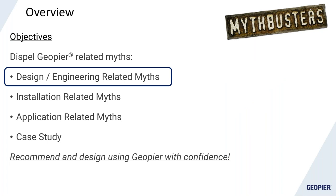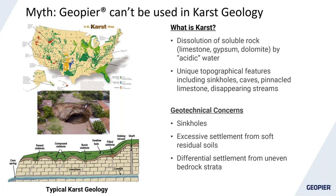We're going to start off with the design and engineering related myths and kick things off with karst. In the simplest terms, karst is the dissolution or dissolving of soluble rock, typically limestone or dolomite, by acetic water which could be as simple as rainwater with a lot of carbon dioxide. When that happens beneath the ground you start to see risks at the surface: sinkholes, excessive settlement from soft residual soils at the soil-limestone interface, and pinnacled bedrock forms causing differential settlement. A U.S. karst map and surface features are also shown here.